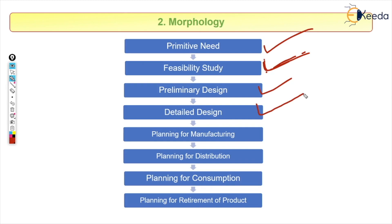After preliminary design, we move to detail design. Here we determine the components: how to fix it to the roof, the shaft, hinges, nut and bolt system, motor, rotor, blades, diameter of blade, width of blade, weight of blade, motor speed, maximum power, electricity supply, etc. After completing detail design, we proceed to planning for manufacture.